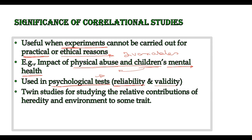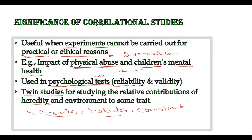The third significance is that correlational studies are mostly used in twin studies. In twin studies, correlational research is used where many variables are involved — such as different kinds of traits, aptitudes, habits, or other psychological constructs — and how these are affected by heredity. Because so many variables are involved, correlational research is the appropriate approach for twin studies.